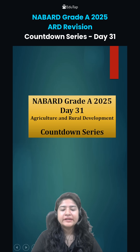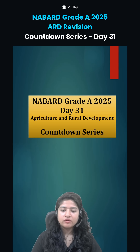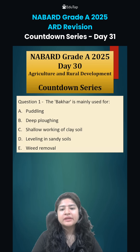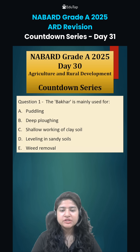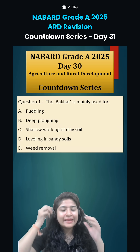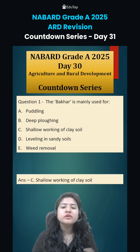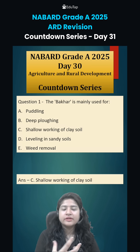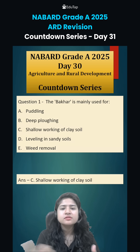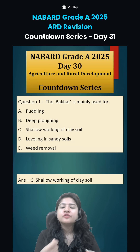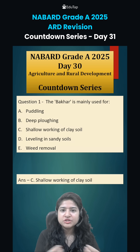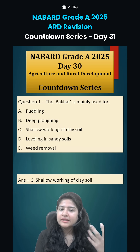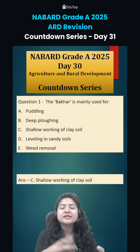Hi everybody, welcome to Day 31 of the ARD countdown series. Let's look at yesterday's answer first. The bhakar is mainly used for shallow working of clay soil. Bhakar is an indigenous instrument used in clay soil fields. A lot of crops are grown in clay soil — for example, rice and some vegetables — and a lot of intercultural operations like weeding need to be done, so bhakar is designed to function in clay soil.